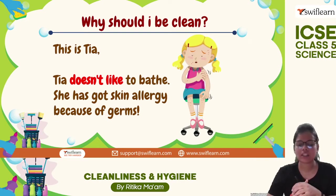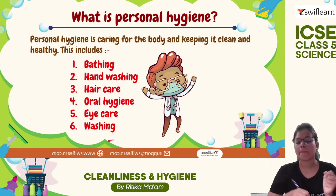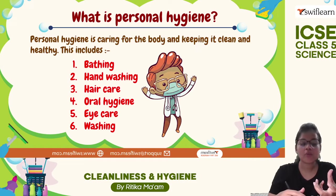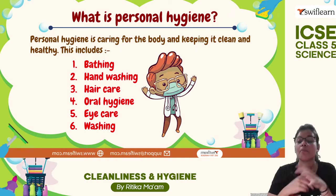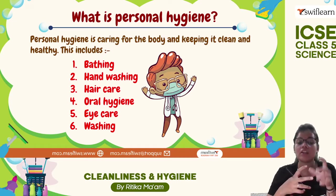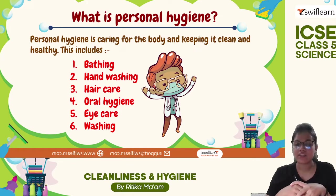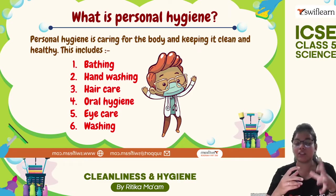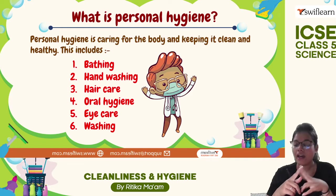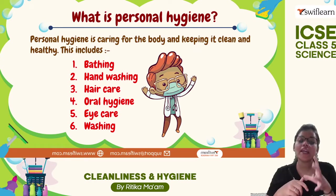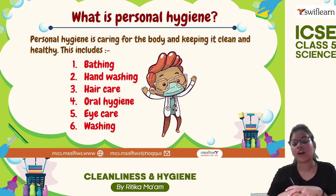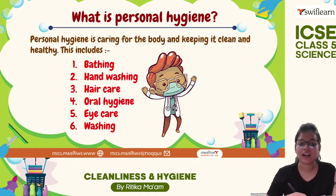Now we are going to see why bathing is important and why personal hygiene is important. Personal hygiene means we take care of our body — we keep it clean and healthy. Personal hygiene includes bathing, hand washing, hair care, oral hygiene, and eye care. All these things are very important to keep our body neat, clean, and healthy.